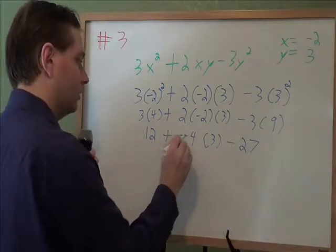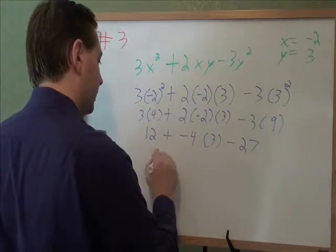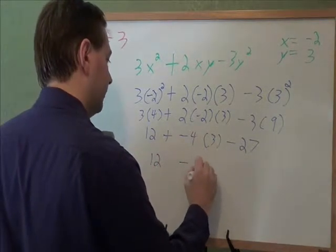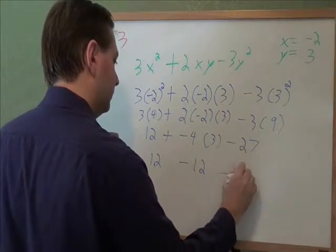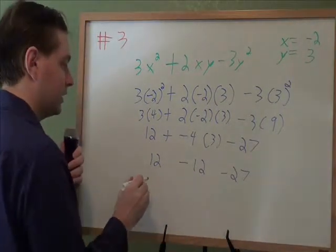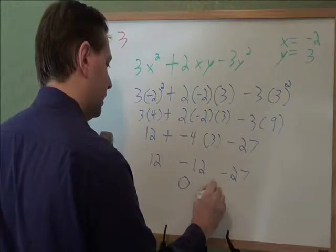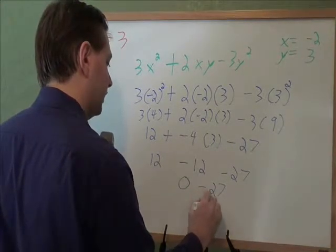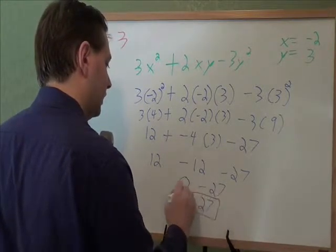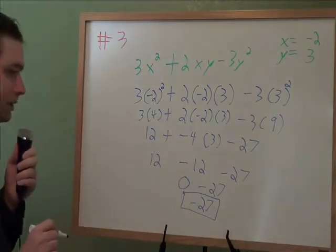We still need to do more multiplying. 4 times 3, that is 12. And now we do all the addition and subtraction. 12 minus 12 is 0. And 0 minus 27 is negative 27. And that is how you evaluate an expression.